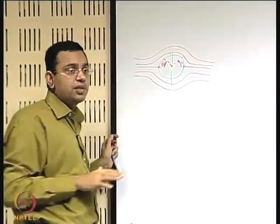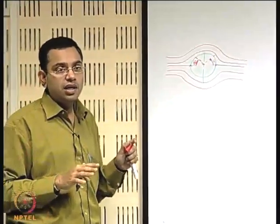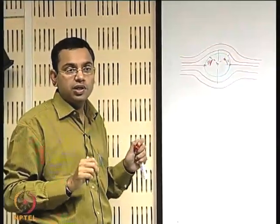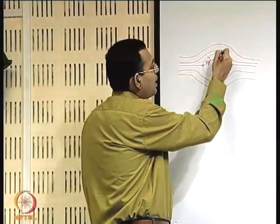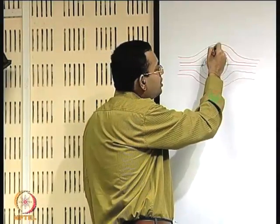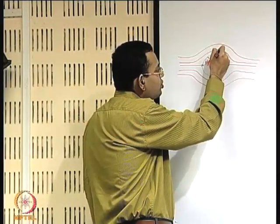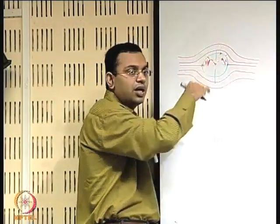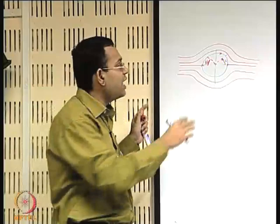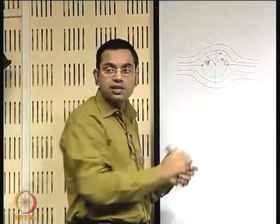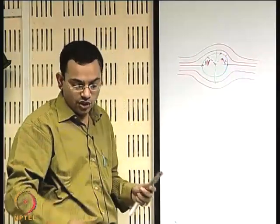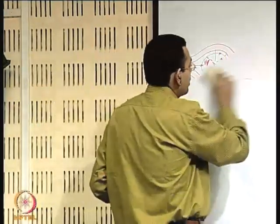Such beautiful symmetric streamline shapes do not exist in the real case, because in reality, with an adverse pressure gradient near the rear, boundary layer separation occurs. Beyond the separation point, the symmetric streamline pattern breaks down, and we will look into that issue more carefully.